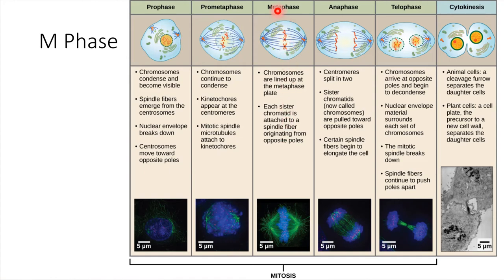In metaphase — the M, think middle — what happens is all of the chromosomes line up at the middle of the cell. You can see them in the schematic; the chromosomes are in red and they're all lined up at the middle. And it's the spindle fibers that have helped to push them there.